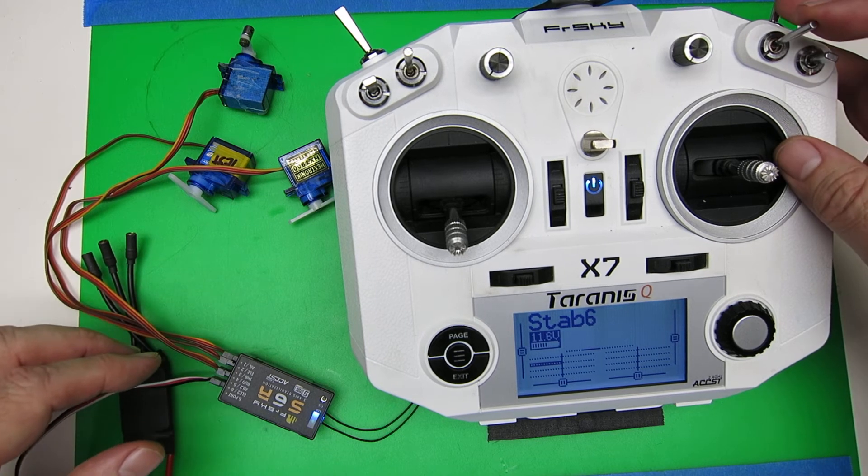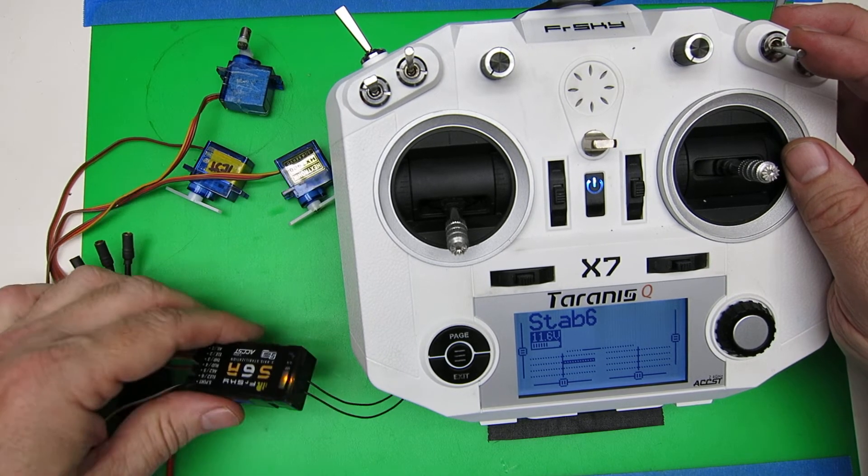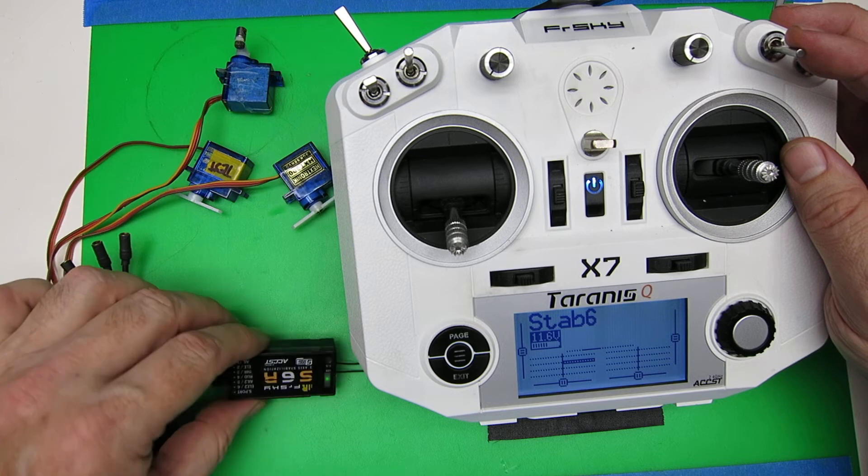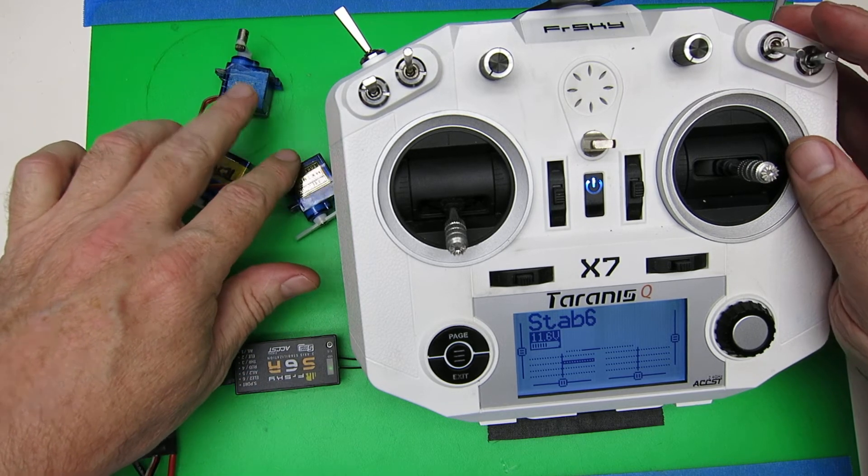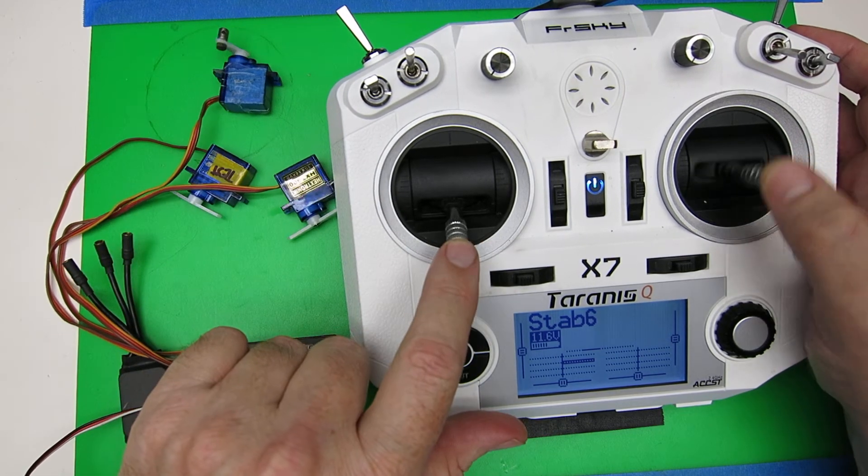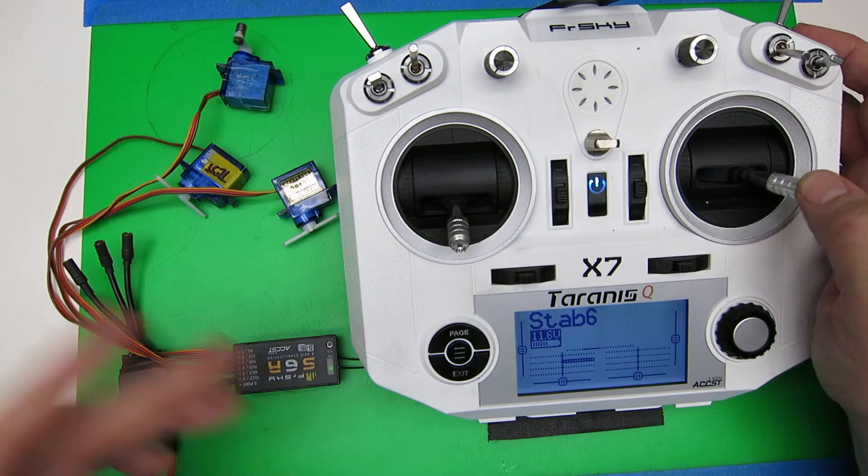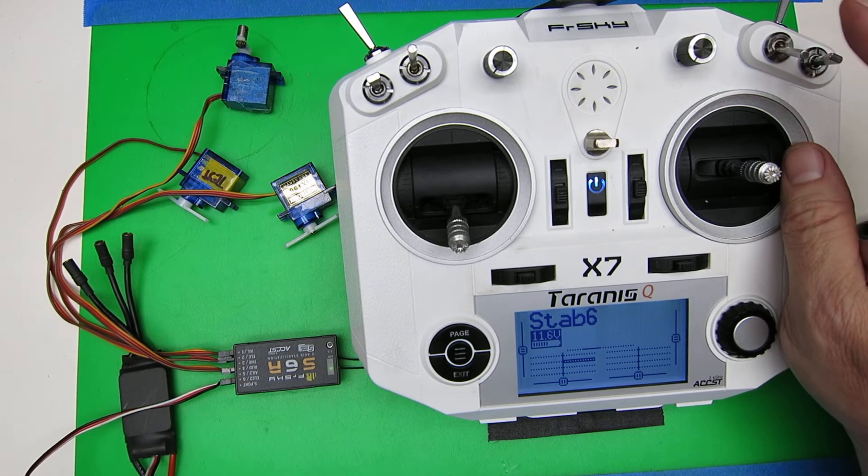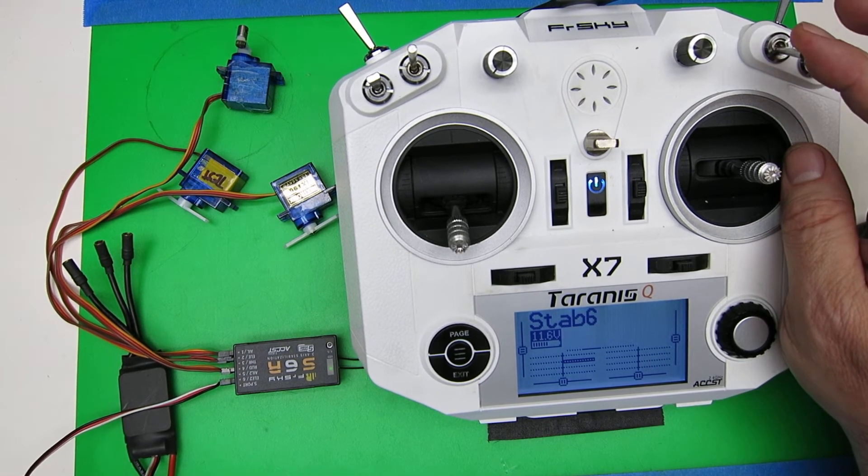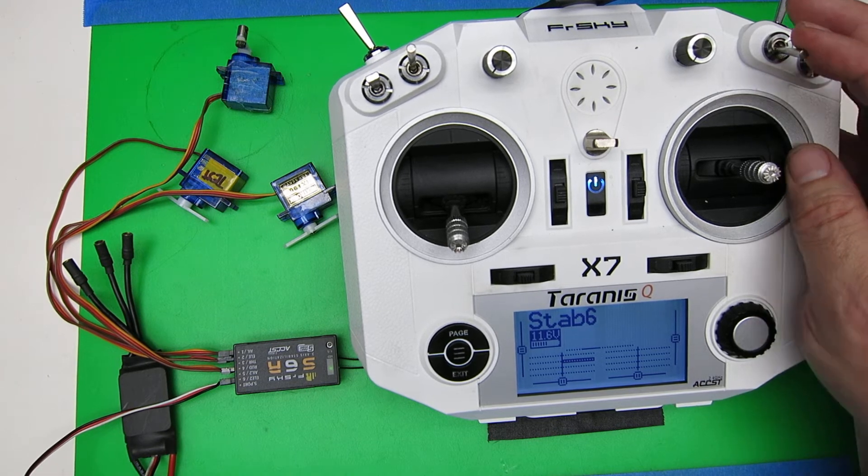Flip the switch down to the bottom and move the unit around. Nothing will happen on the servos, but as you move the sticks, you'll get normal motion. That's because bottom is manual mode, and nothing special needs to happen.